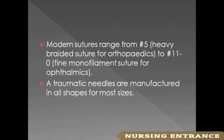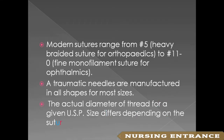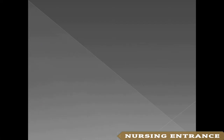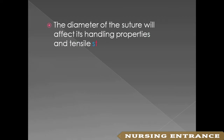Modern sutures range from size 5, heavy braided sutures for orthopedics, to 11-0 fine monofilament sutures for ophthalmics. Atraumatic needles are manufactured in all shapes for most sizes. The actual diameter of the thread for a given USP size differs depending on the material.